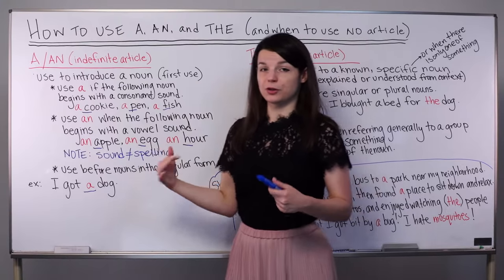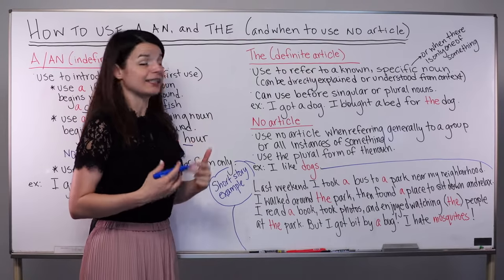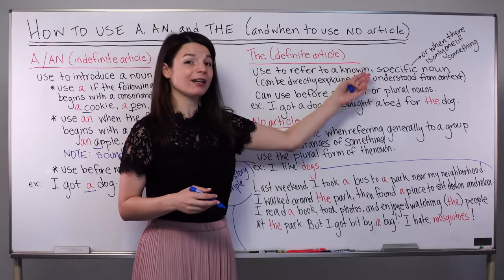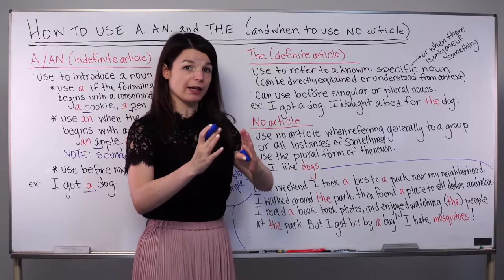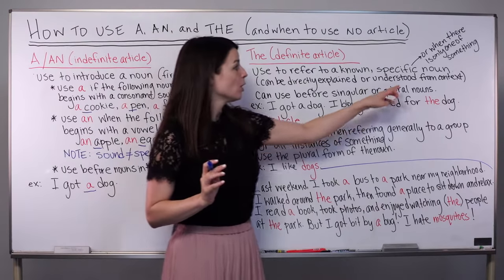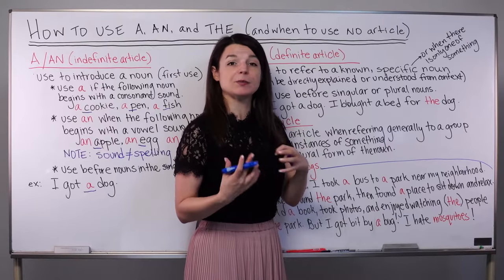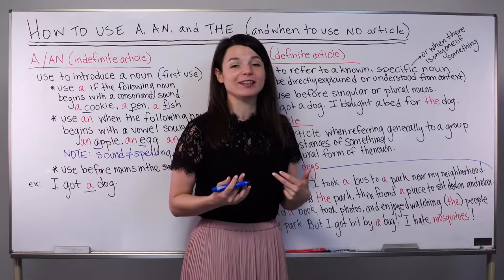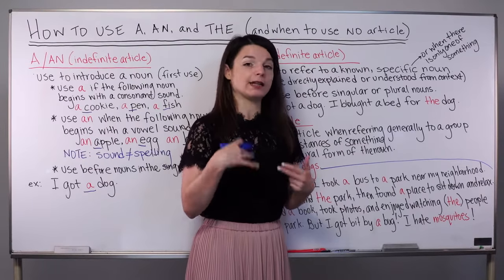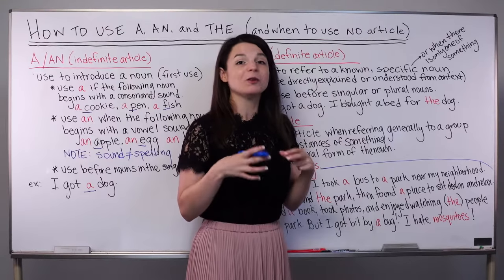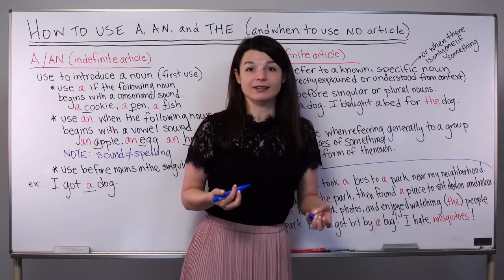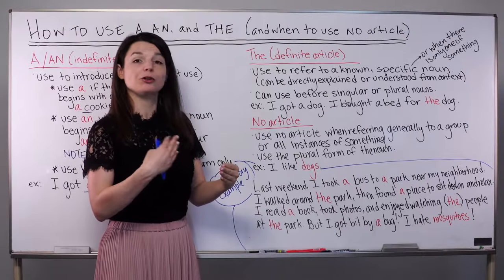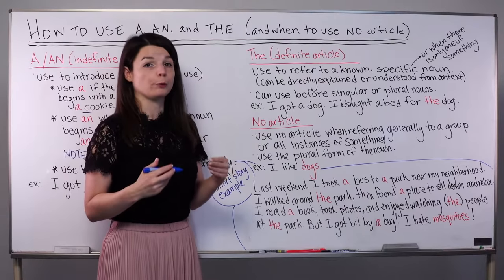Let's compare this now to the definite article. 'The' is the definite article in English. We use 'the' to refer to a known or a specific noun — this can be something that we directly explain or we just understand it from the context. Relating to this, something we understand from context or a specific noun can be when there's only one of something. A great example of this is some countries — for example, the United States of America, or the Republic of so-and-so. Those begin with 'the' because there's only one of that and we understand that.